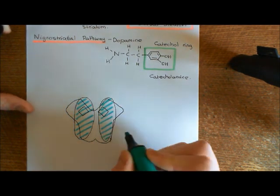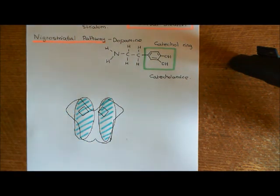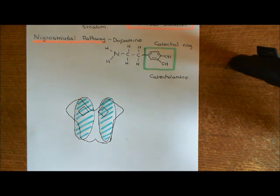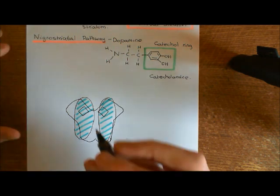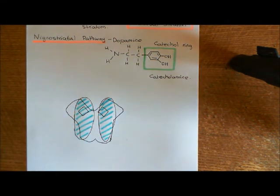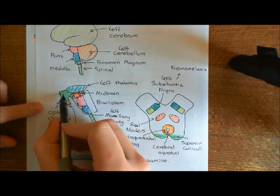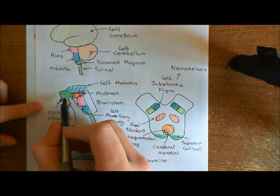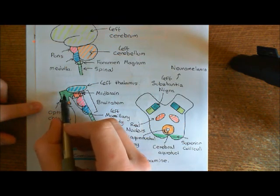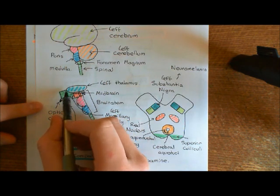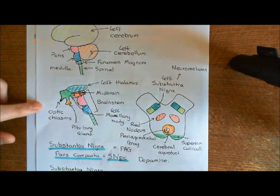In order to show the nigrostriatal pathway, we need the structure that sits in front of the thalami — the hypothalamus — because these dopaminergic neurons from the substantia nigra pars compacta are going to send their axons into a structure known as the medial forebrain bundle, which runs through the hypothalamus. Now the hypothalamus is not just one great big blob; it is actually hollow, with the third ventricle sitting inside of it, full of cerebrospinal fluid.